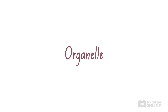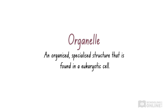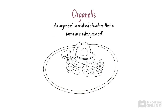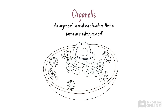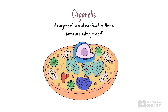An organelle is an organised, specialised structure that is found in a eukaryotic cell. You could even say that these organelles are what make eukaryotes so complex. Each organelle has its own function, but all the organelles need to work together to ensure the animal's survival. Examples of organelles include the nucleus, ribosomes and lysosomes.